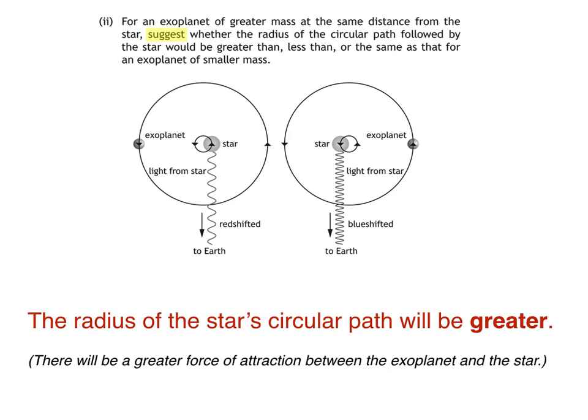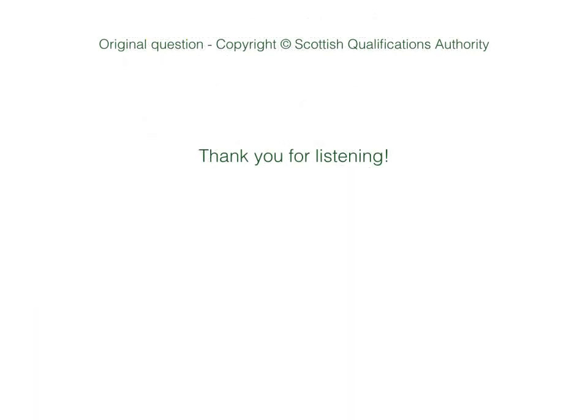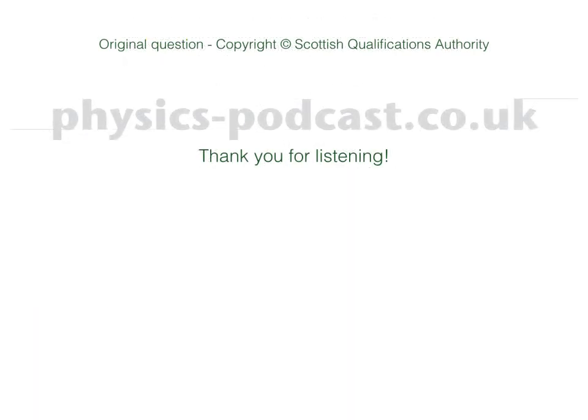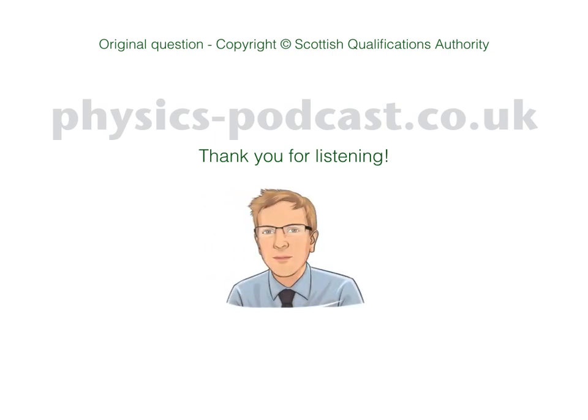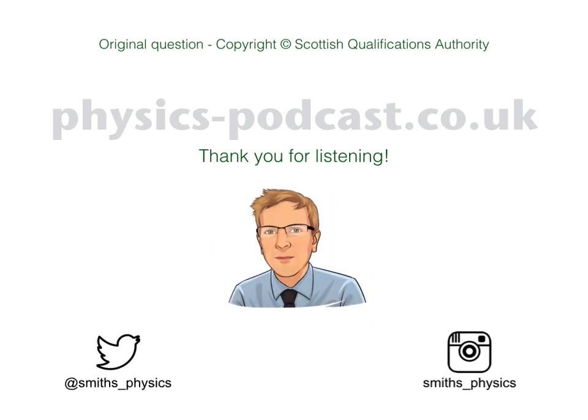This forms the basis of what's called the radial velocity method of exoplanet detection, also known as Doppler spectroscopy. Well, that's us for another video. Stay tuned for more fascinating insights into the world of physics. And if you've not already done so, subscribe to receive updates when new videos are released. For more information on upcoming videos, summary sheets and so on, visit physics-podcast.co.uk. Thank you for listening.